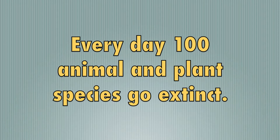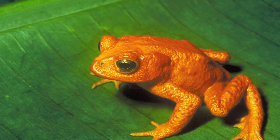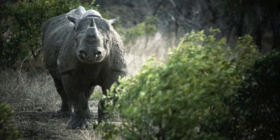Every day, about 100 plants and animals on this planet go extinct, and at this rate, it indicates that about 27,000 species will be lost every year to extinction.